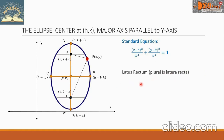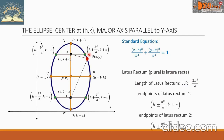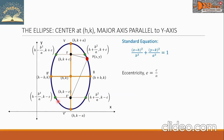Now the latus rectum — we have two latera recta. The length of the latus rectum, denoted LLR, equals 2b²/a. We can write the coordinates of the endpoints of each latus rectum. For the first latus rectum, the endpoints are (h ± b²/a, k+c). For the second latus rectum, the endpoints are (h ± b²/a, k−c). The eccentricity, denoted by E, equals c/a.